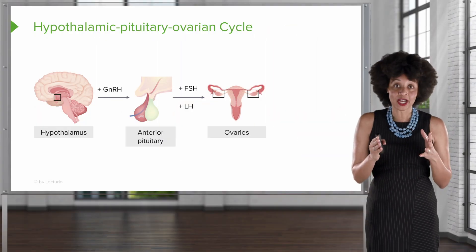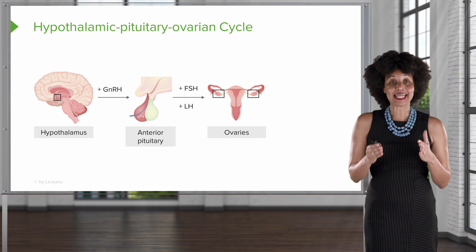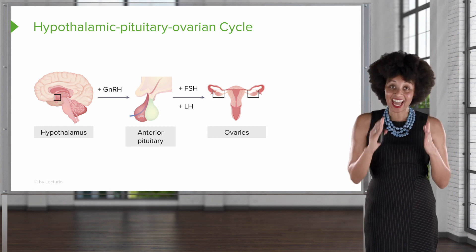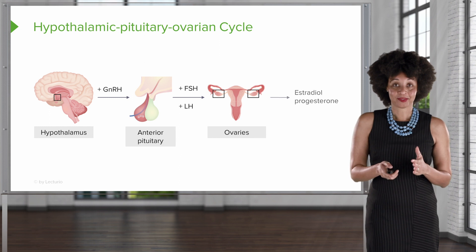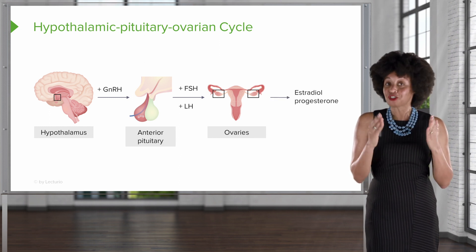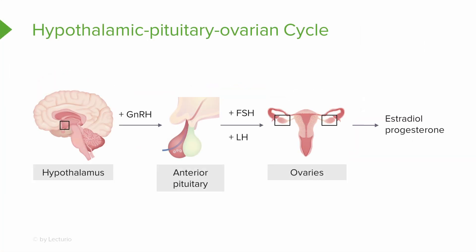Those two hormones are responsible for acting on the ovaries and help to build the follicle from which the egg emerges. Part of the function of the ovary is to release two hormones: estradiol and progesterone. Estradiol is just a type of estrogen, so don't get confused by that. This is the HPO cycle.